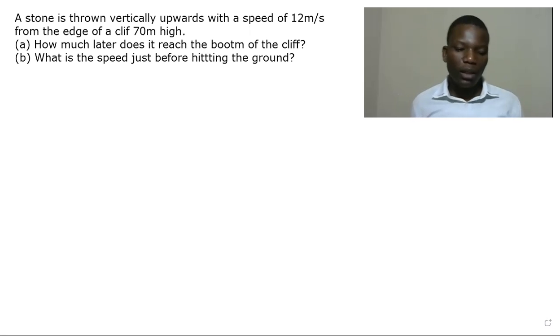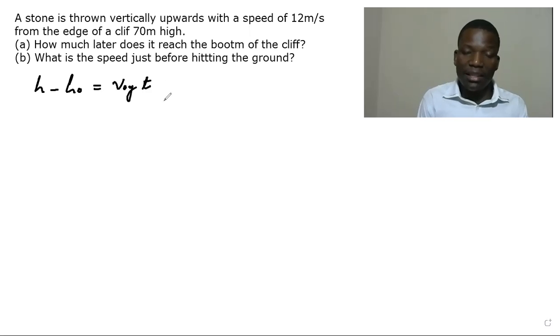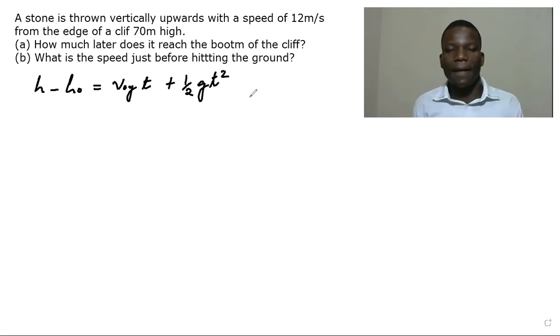So here we set, first is to set final height minus initial height is going to be initial velocity in the y direction times time plus half g t squared.